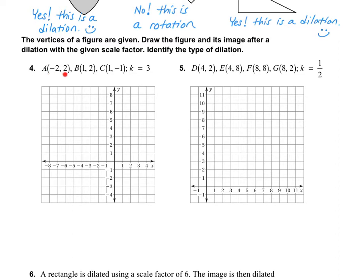So let's start with A. So on A, we have negative 2, 2. So remember, we start at the origin. And the first point is on my x-axis. So I go down 2 on the x-axis. My second point is the y-axis. So I go up 2. So this is where negative 2, 2 live.